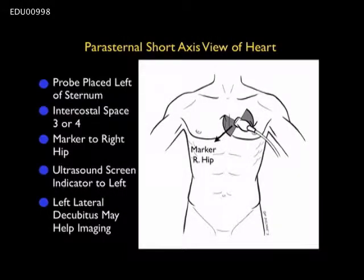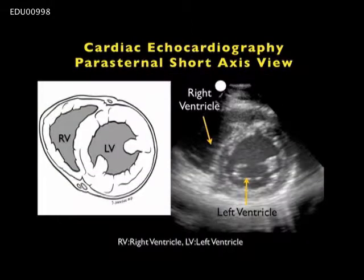Let's move on to discuss the parasternal short axis view of the heart. A pearl here: don't take the probe off the chest once you've obtained the parasternal long axis view. Simply rotate the probe 90 degrees clockwise so the indicator dot is now down towards the patient's right hip — with the caveat that the ultrasound screen indicator dot is positioned to the left of the screen. Moving the patient into left lateral decubitus position may again help imaging. From this view we're imaging the heart in cross section, seeing the left ventricle as a cylinder to the bottom right and the right ventricle to the upper left.